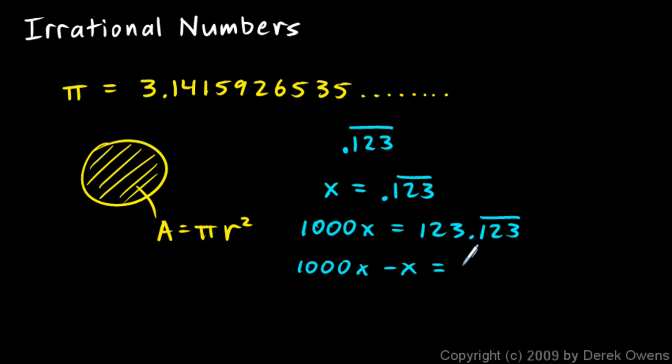And we do 1,000x minus x is equal to this minus this. And we've worked a lot of problems like this before. 1,000x minus x is equal to 1,000x minus x. And these pieces here get lopped off. And so we're left with 999x is equal to 123. So x ends up being 123 over 999.